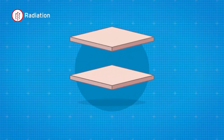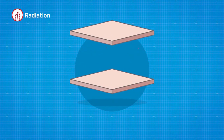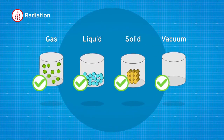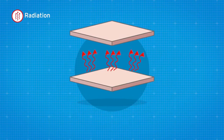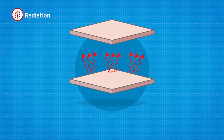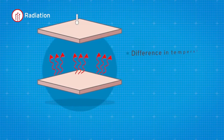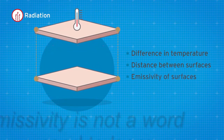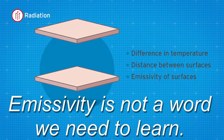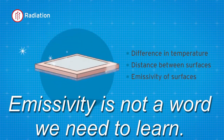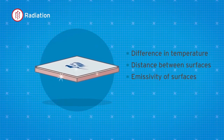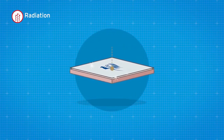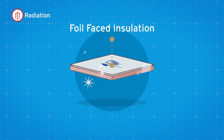Radiation is the method of heat transfer across space from one body to another as energy. Radiation can occur in gases, liquids, solids and even in a vacuum. The rate of heat transfer through radiation is controlled by the difference in temperature of the surfaces, the distance between these surfaces, and the emissivity of the surfaces. Emissivity is how shiny a surface is — in other words, its ability to reflect thermal radiation. An example would be a low-emissivity foil facing on an insulation panel or board.